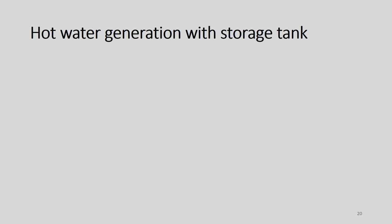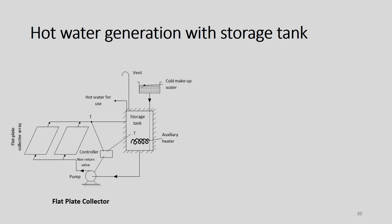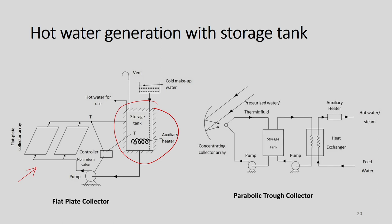We can also discuss hot water generation with a storage tank. Using a flat plate collector, we can generate hot water and store it in an insulated tank for use when required, reaching temperatures close to 120–130°C depending on the number of collectors connected in series and parallel. We can also use parabolic trough collectors to generate hot water for applications in dairy farms and other industrial processes.